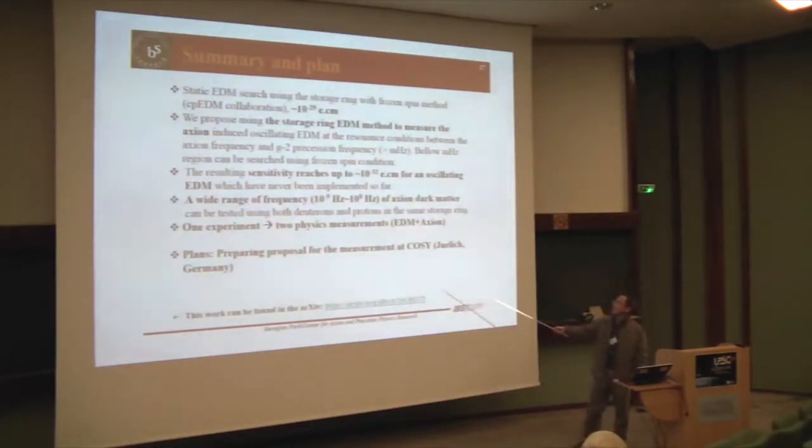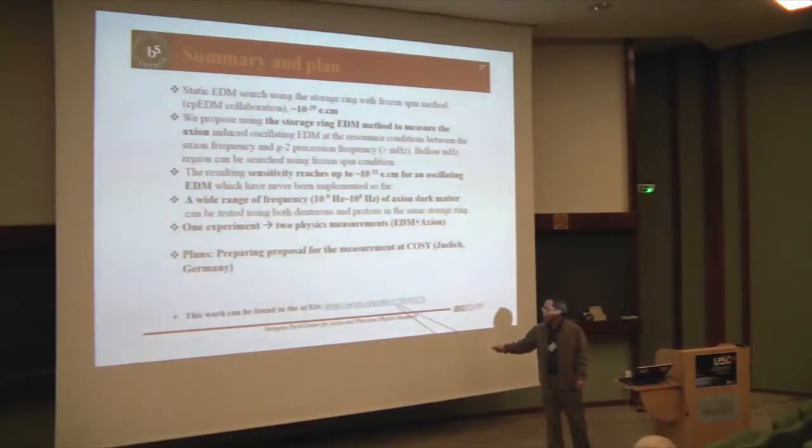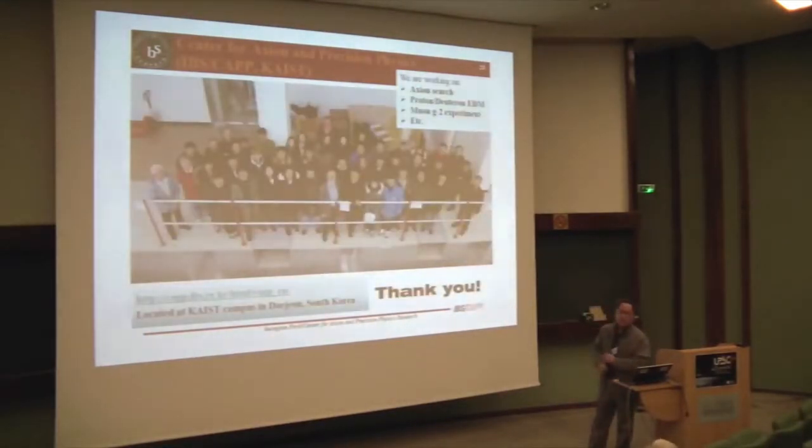So, now, we are preparing a proposal. Of course, we cannot cover all the frequency ranges. But, we are trying, we start, we will start with high frequency regions. Of course, with B field ring. Okay, you can find, we have archived this. And, right now, I am preparing the table. And, you can go there. But, some table, number of tables are wrong. I found some errors in the calculation. I fixed that. The table changes. And, you will see the correct number later. The number in this presentation is correct. This one is correct. Thank you very much.